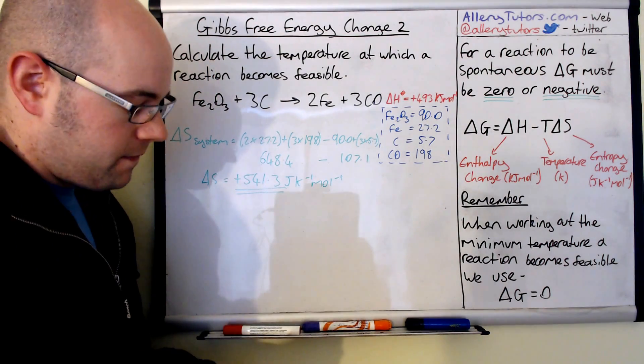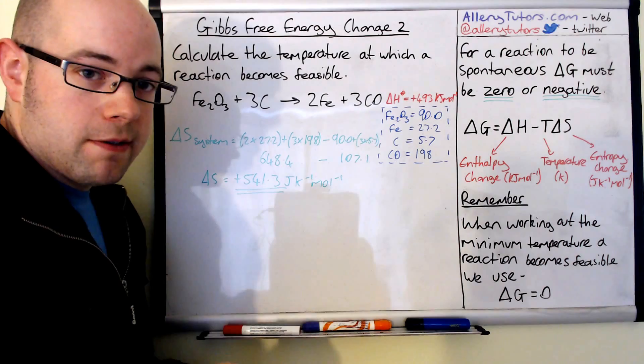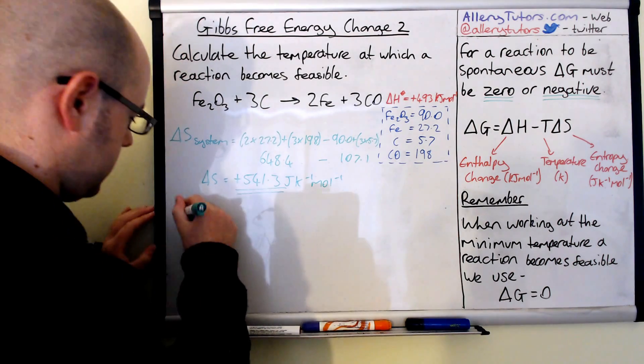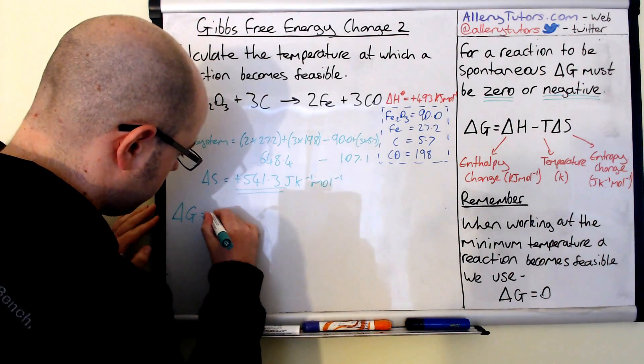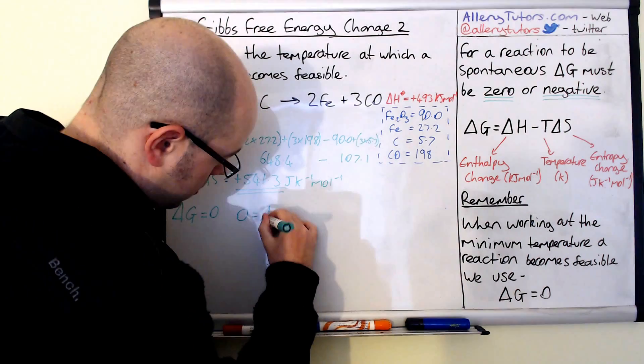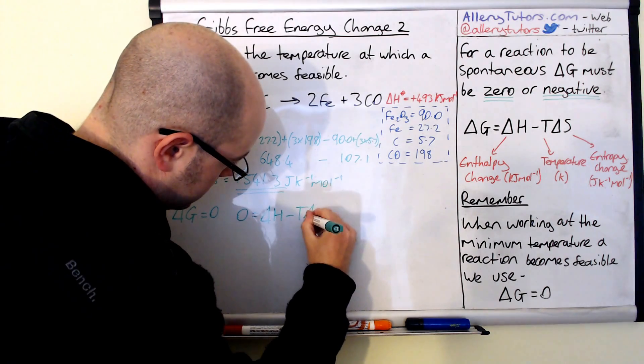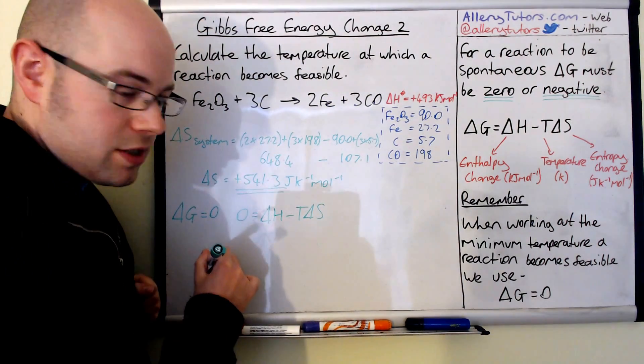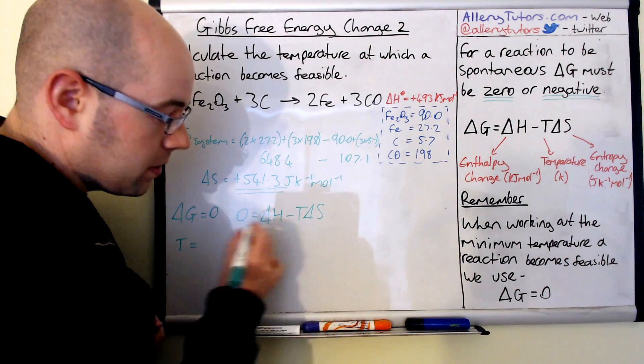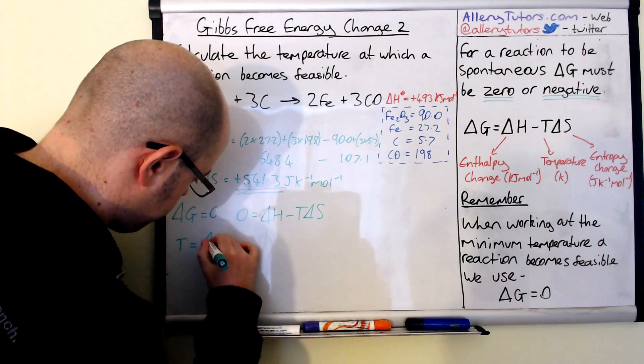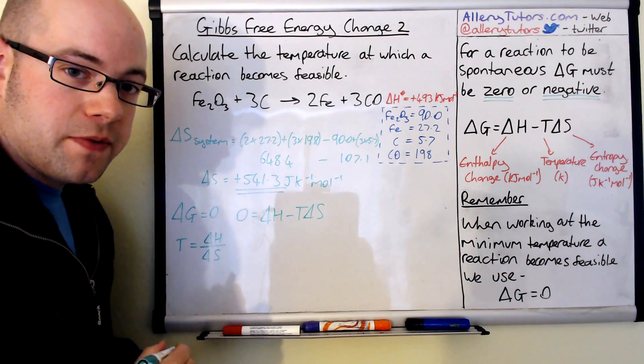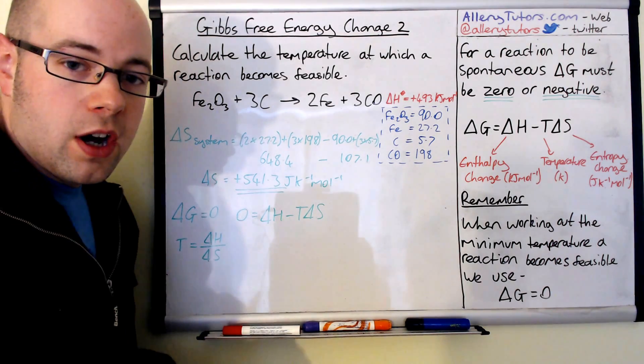Remember we said for a reaction to be feasible, we assume that delta G equals 0, because that's when it's just feasible. Delta G will equal 0 when a reaction is feasible. So effectively, this means that 0 will equal delta H minus T delta S. If we rearrange this equation to work out temperature, then temperature will equal delta H over delta S. Our delta G is not there anymore because it holds the value of 0.